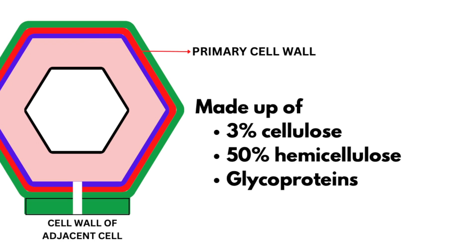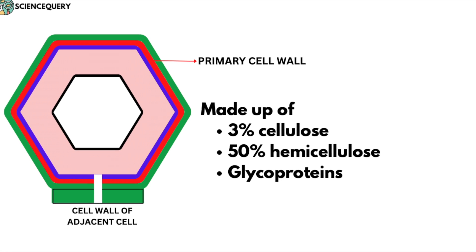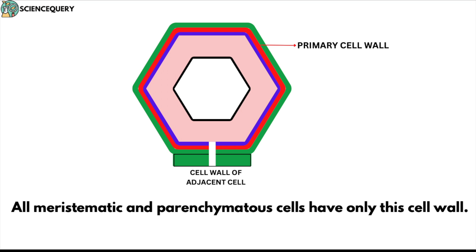The primary cell wall is made up of 3 percent cellulose, 50 percent hemicellulose and glycoproteins. All meristematic and parenchymatous cells have only this cell wall.